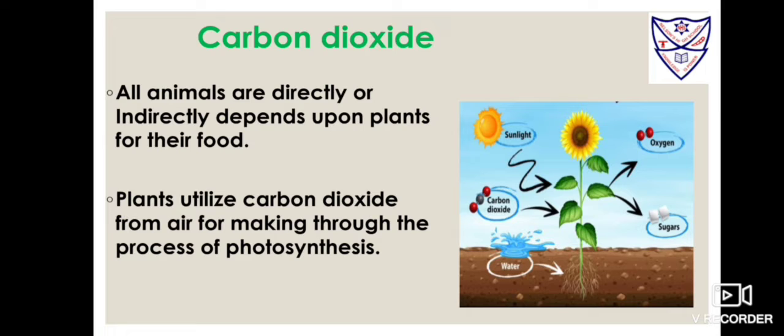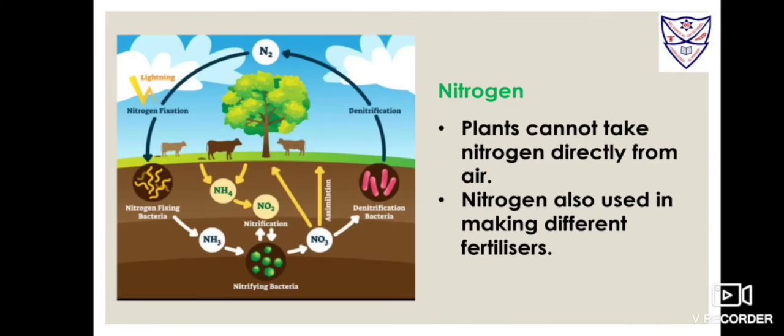All animals are directly or indirectly dependent upon plants for their food. Nitrogen. It is required by all plants and animals as it forms part of proteins in every living being. Students, plants cannot take nitrogen directly from air.